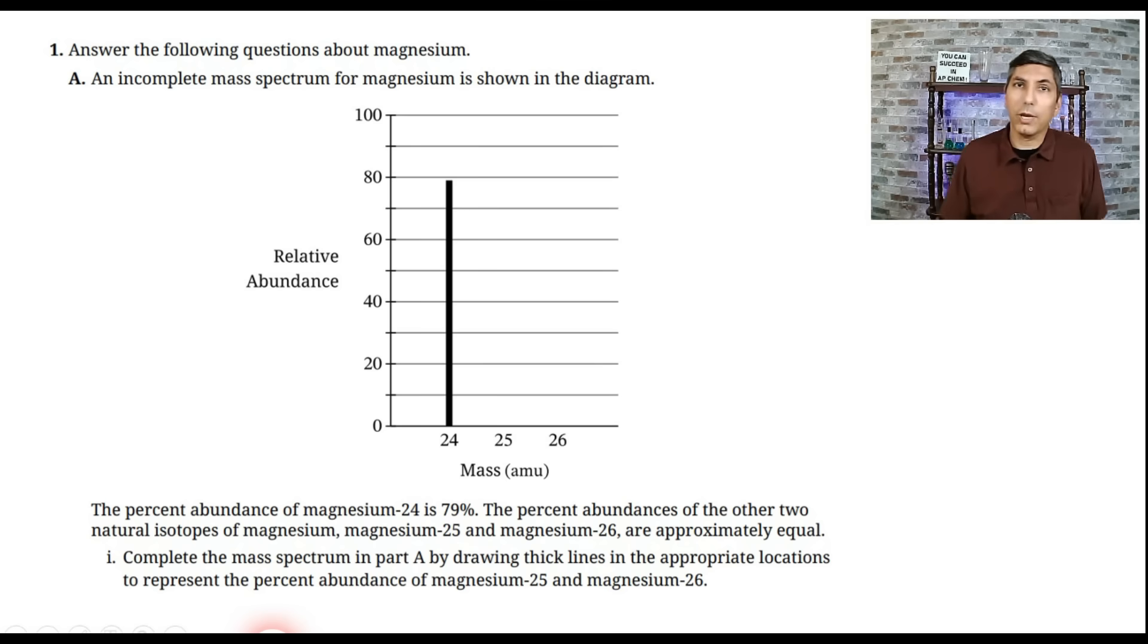Well, if magnesium-24 is about 79%, that means that the other two isotopes have to have a total mass of about 21%. So if both of those are equal, that means that each of them should be somewhere around 10 and a half percent. So I'll draw two bars right here that are somewhere around 10 and a half percent, just a little bit above the 10% level there. So if you did that, give yourself a point.